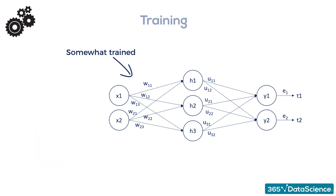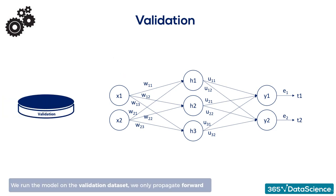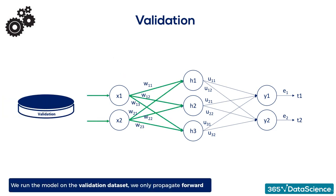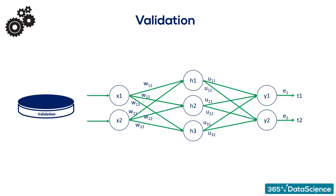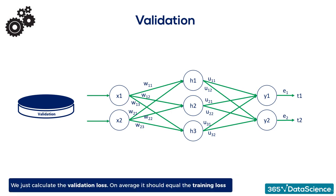What we do next is take the model and apply it to the validation dataset. This time, we just run it without updating the weights, so we only propagate forward, not backward. In other words, we just calculate its loss function.